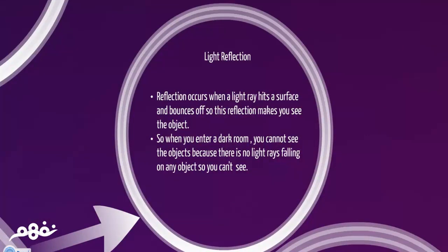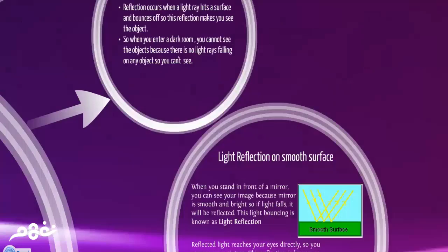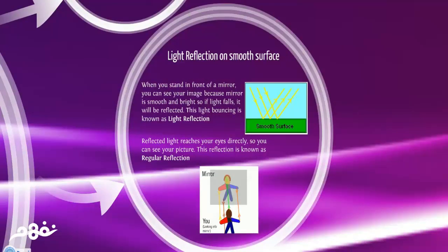Light reflection. Reflection occurs when a light ray hits the surface and bounces off so this reflection makes you see the object. So when you enter a dark room, you cannot see the object simply because there is no light rays falling on any object. Light reflection happens on two types of surfaces, smooth surface and rough surface. When it comes to smooth surface such as a mirror, let's try this. You can stand in front of a mirror and when you stand in front of a mirror you will see your image. This is because mirror is smooth and bright. So if light falls, it will be reflected. This light bouncing is known as light reflection. Reflected rays reach your eyes directly so you can see your picture. This reflection is known as regular reflection.